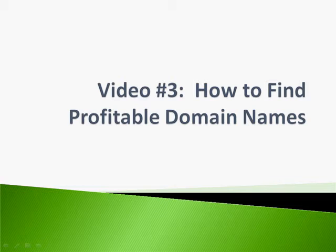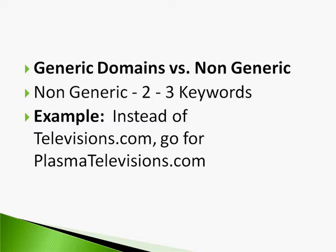Now that you understand what to avoid, we can move on to video three and talk about how to find profitable domain names. There's a specific technique I'm going to show you that many of you have probably already used, so it should be pretty easy to implement. Let's talk about generic domain names versus non-generic. Generic domain names are basically things like televisions.com or computers.com — a generic term that covers a whole class or big topic. A non-generic term would be like a subtopic, like plasma televisions.com. Most generic domain names are taken, but you can still focus on non-generic domain names and still make good money with them.